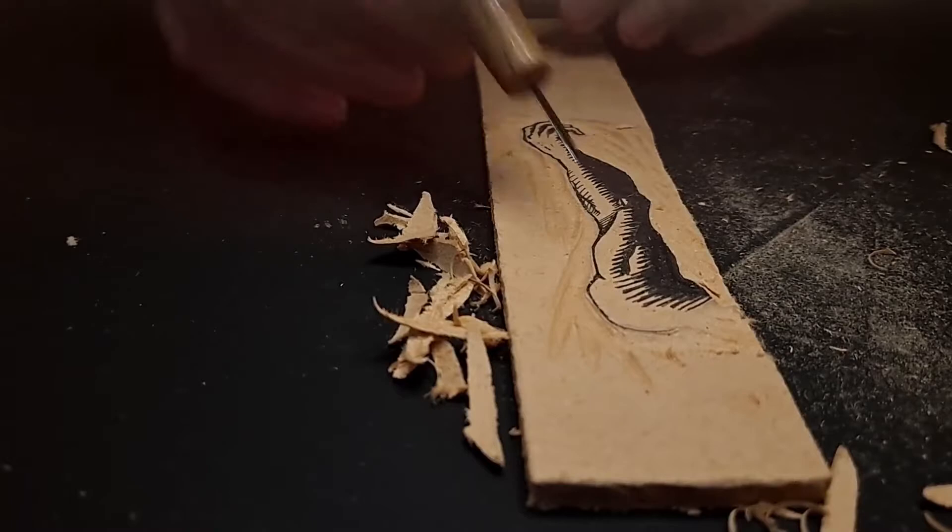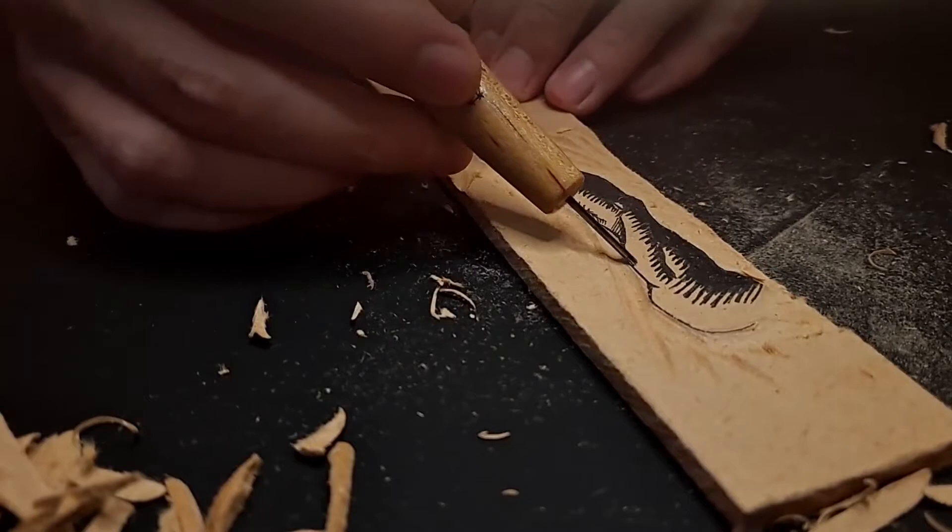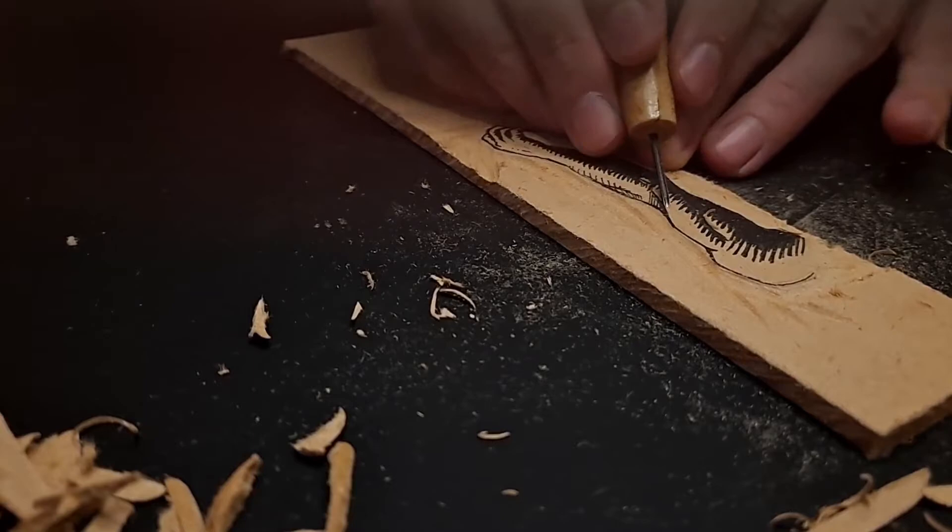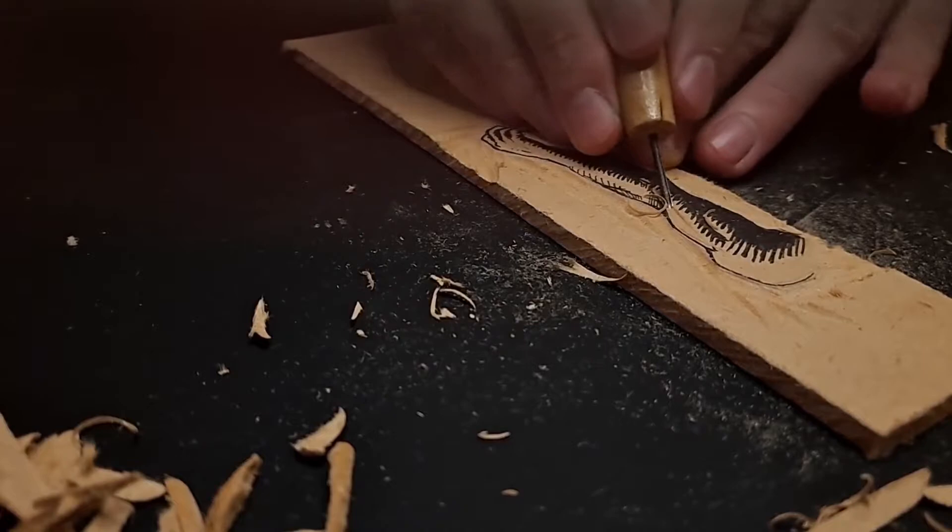So now that the outline is all established, I can start thinking about the interior. Usually for a shape like this, the easiest way to do it is to first carve out the white shape on the inside here.